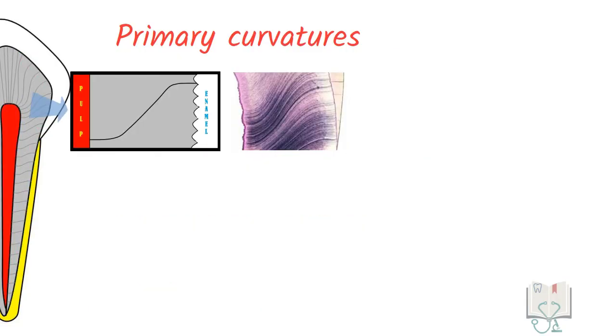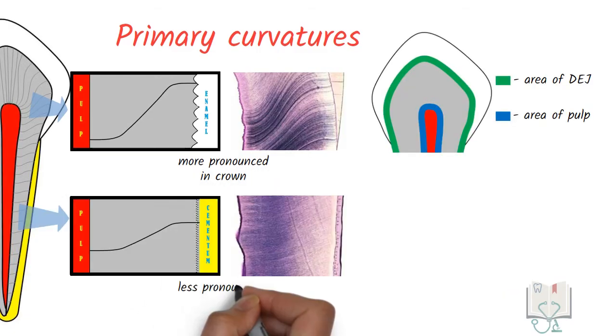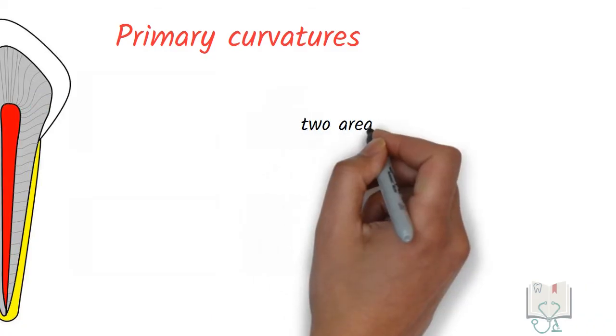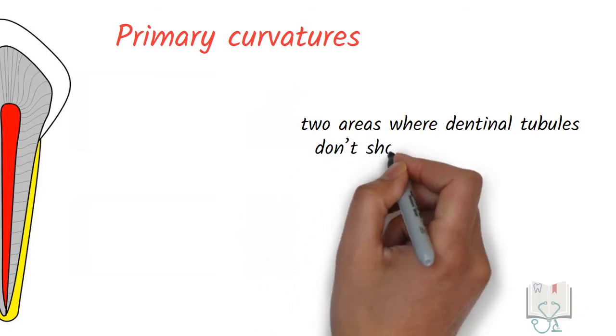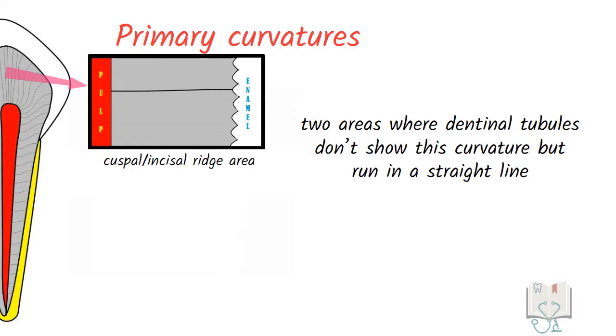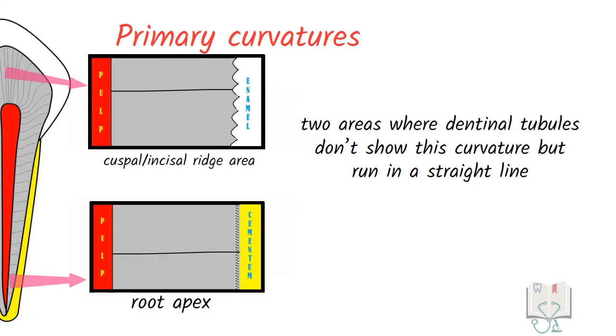This S shaped curvature is more pronounced in the crown as the difference in area is more whereas it is lesser in roots where the difference is less. Moreover there are two areas where dentineal tubules don't show this curvature but run in a straight line. First is the cusp or the incisal ridge area. Second is the root apex.